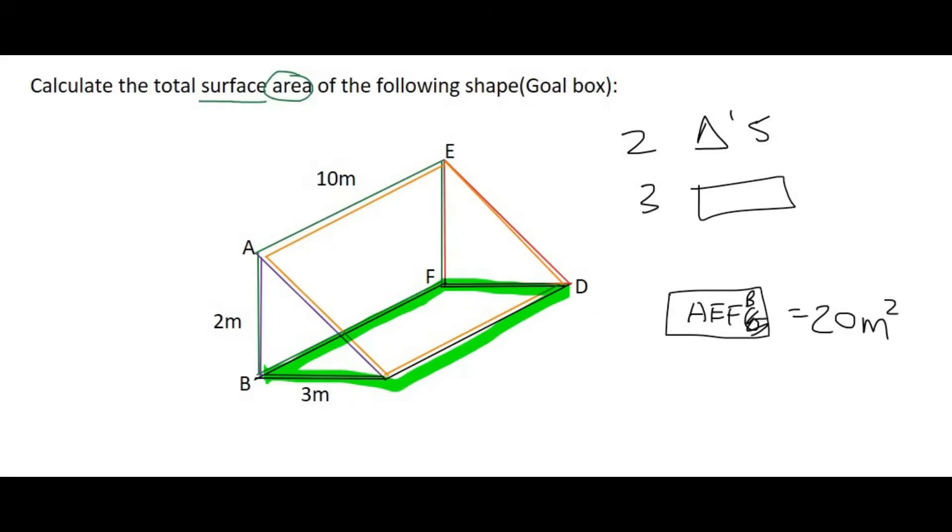Next we could look at this rectangle over here. Well that one's length is also going to be 10, because if that's 10, then this length down here is 10. And then the width is 3. So we'll call that rectangle FBCD. And that's going to be 10 times 3, which is 30 meters squared.